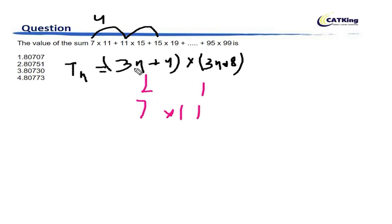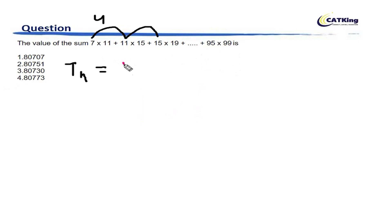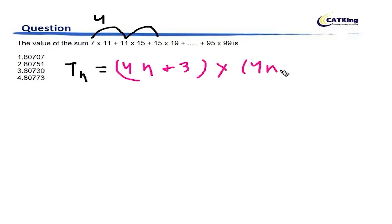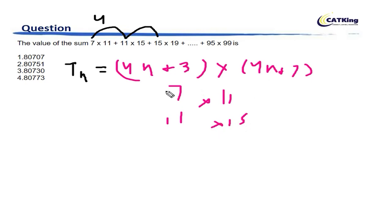If you put n equal to 2 here, that does not satisfy. So let's reverse it — let's make it 4n plus 3. For n equal to 1 this is 7, and into the next factor, which is 4n plus 7, for n equal to 1 this is 11. For n equal to 2, this is 11, and for n equal to 2, 4n plus 7 gives 15. So this one fits perfectly.